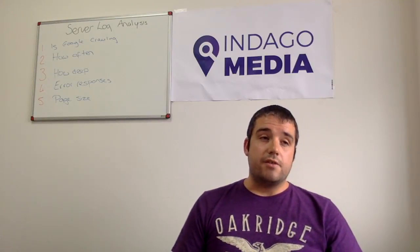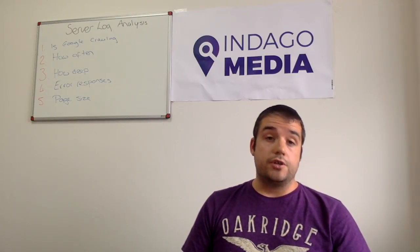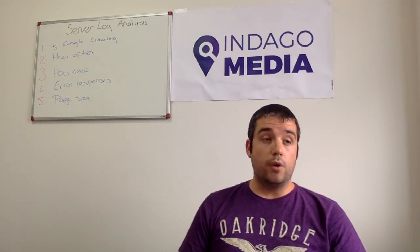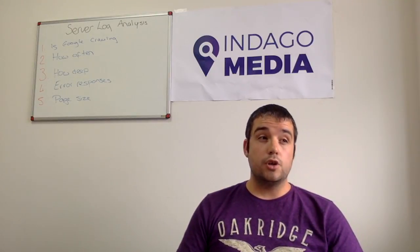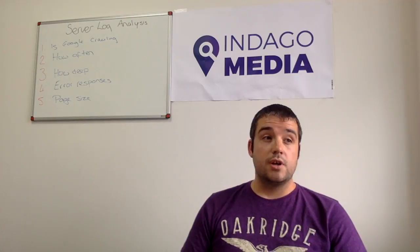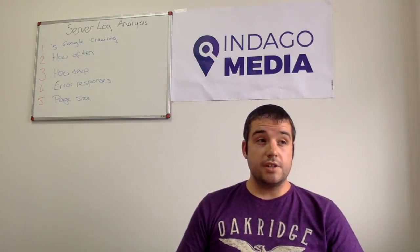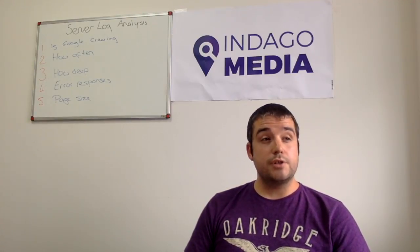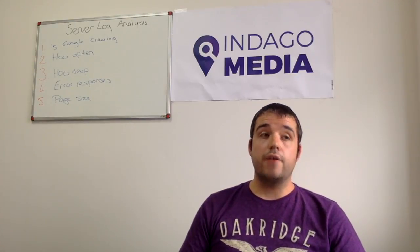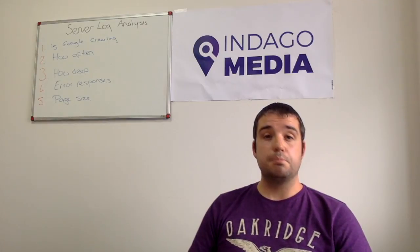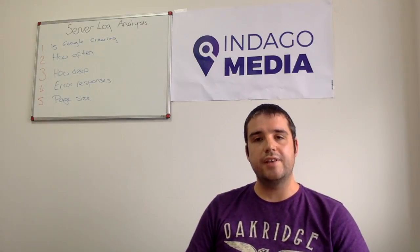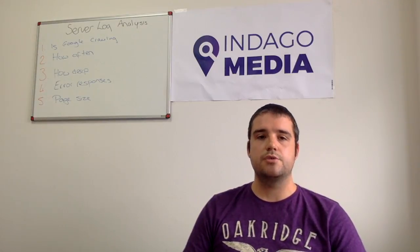Next: error responses. Things like 404s — how many 404 pages does Google find? These aren't great from Google's point of view, and they're not great from a UX point of view, so you can easily fix these. Other things to look out for are things like 302s. I know they're not an error response, but they're not great from Google's perspective. So if you can find these, fix them.